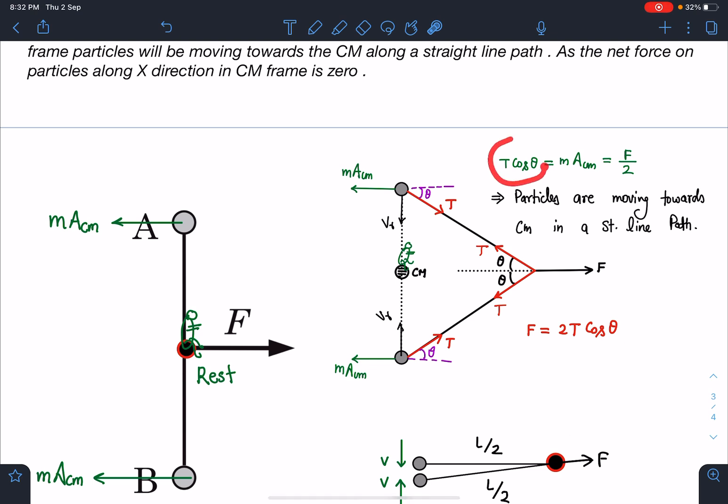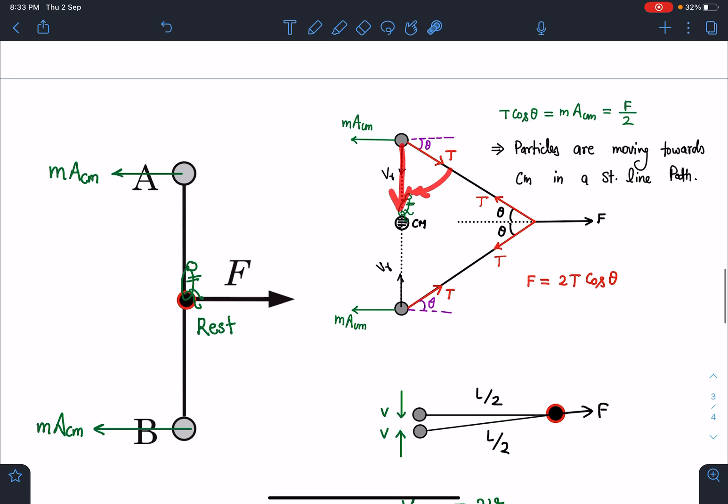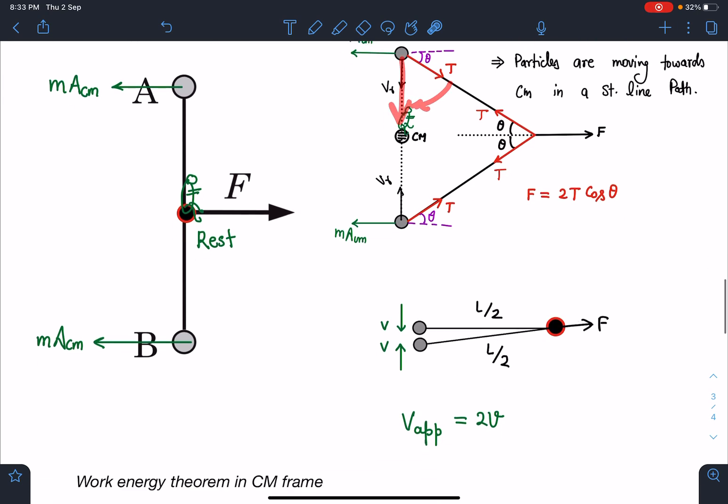So you can see here that T cos theta is F by 2. That means on this particle in horizontal direction, net force is zero. And due to T sin theta, this particle will be moving in this direction. And similarly, we can say the same thing for this also. At this moment, this distance is L by 2 cos theta.